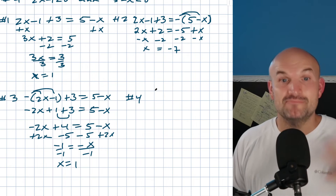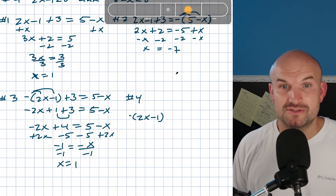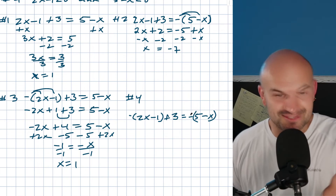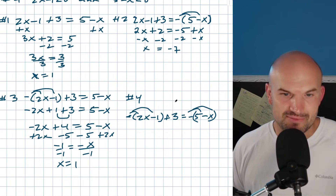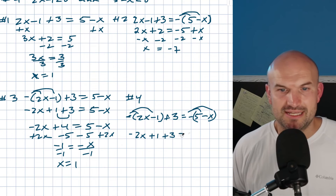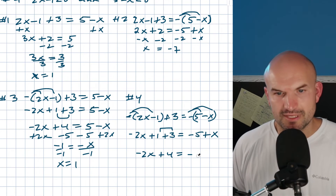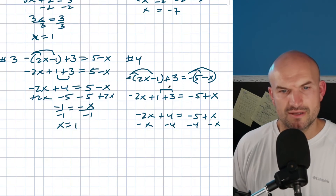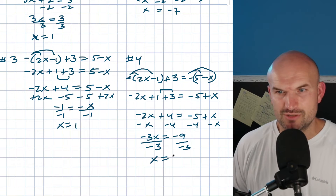Case number four — negating both arguments. We write negative of (2x minus 1 plus 3) equals negative of (5 minus x). Be careful with your parentheses — it should be negative (5 minus x), not negative 5 minus x. Distributing both sides gives negative 2x plus 1 plus 3 equals negative 5 plus x, which simplifies to negative 2x plus 4 equals negative 5 plus x. Subtracting x and subtracting 4 gives negative 3x equals negative 9. Dividing by negative 3, x equals positive 3.